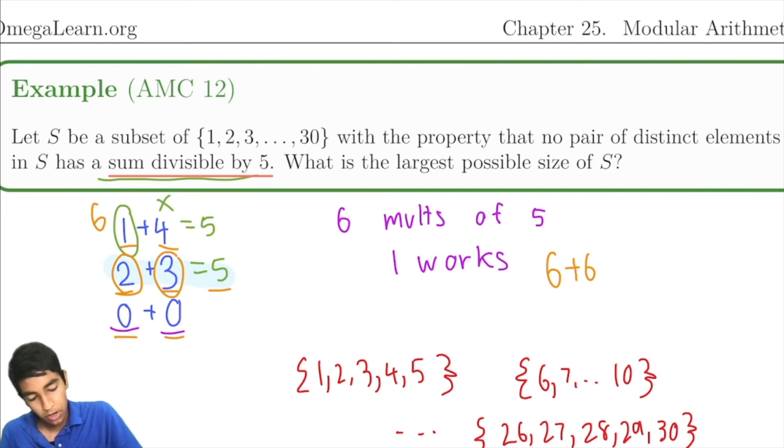Or this is for 1 mod 5, and this is 2 mod 5. So in total, we have 6 plus 6 plus 1, remember the multiple of 5, equals 13. So that's our answer.